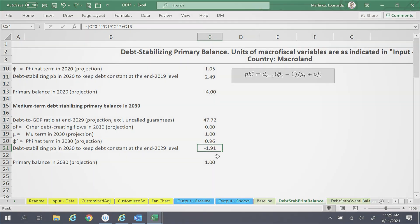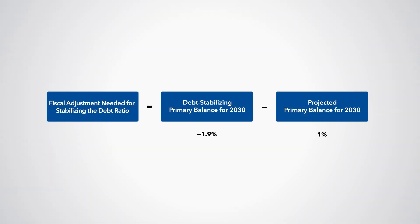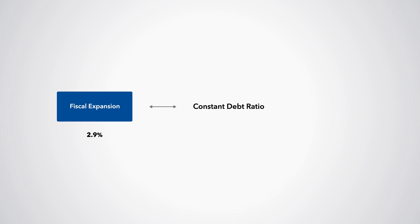Therefore, the fiscal adjustment needed to stabilize the debt ratio is minus 2.9% of GDP. This means that in 2030, compared with the baseline scenario, the government could afford a fiscal expansion, or a negative fiscal adjustment of 2.9% of GDP, while keeping the debt ratio constant at the 2029 level.